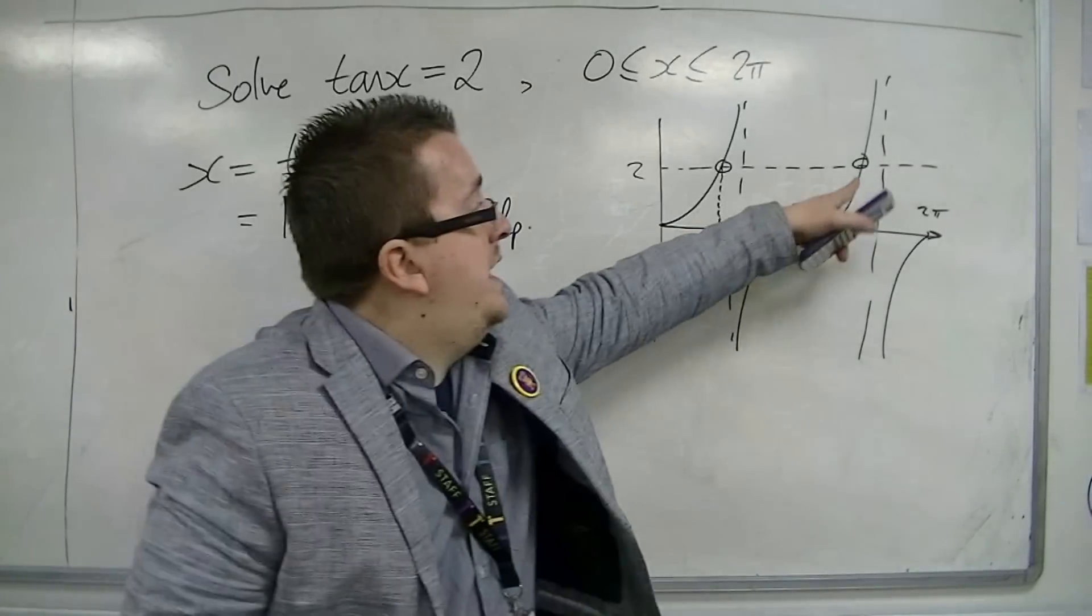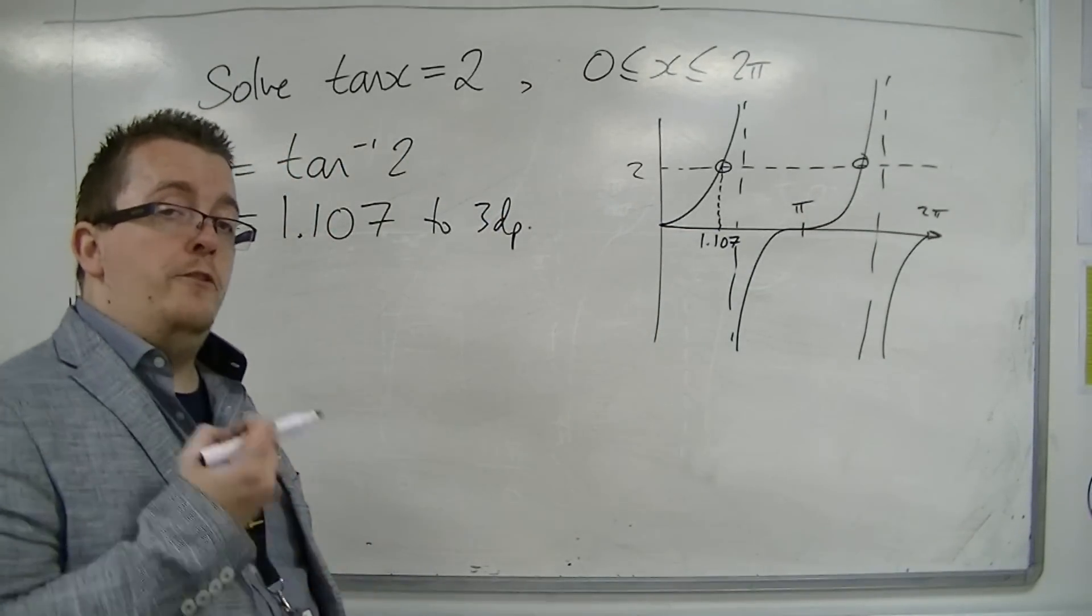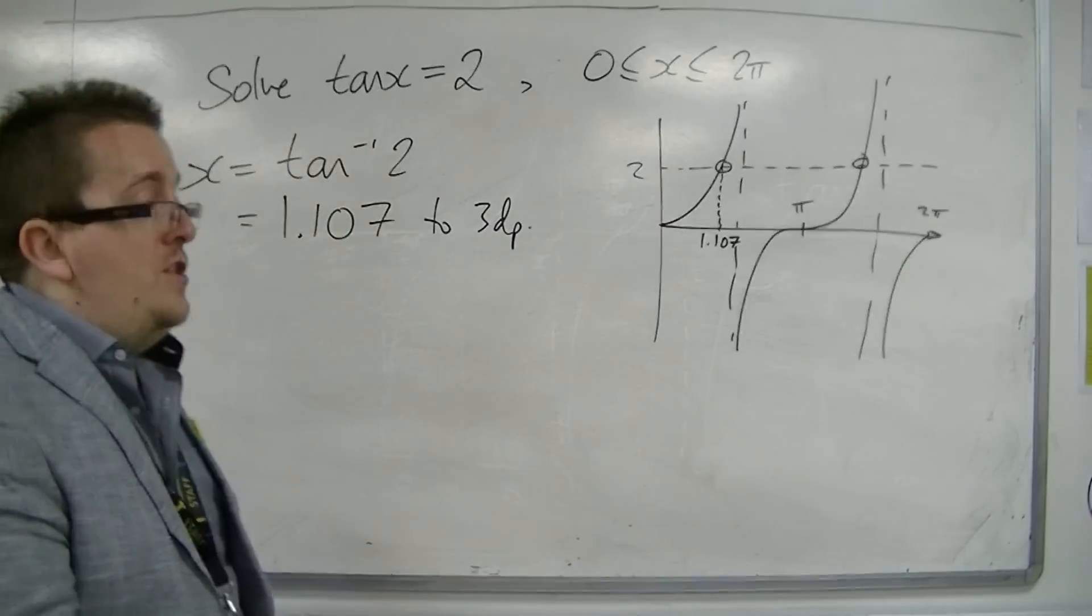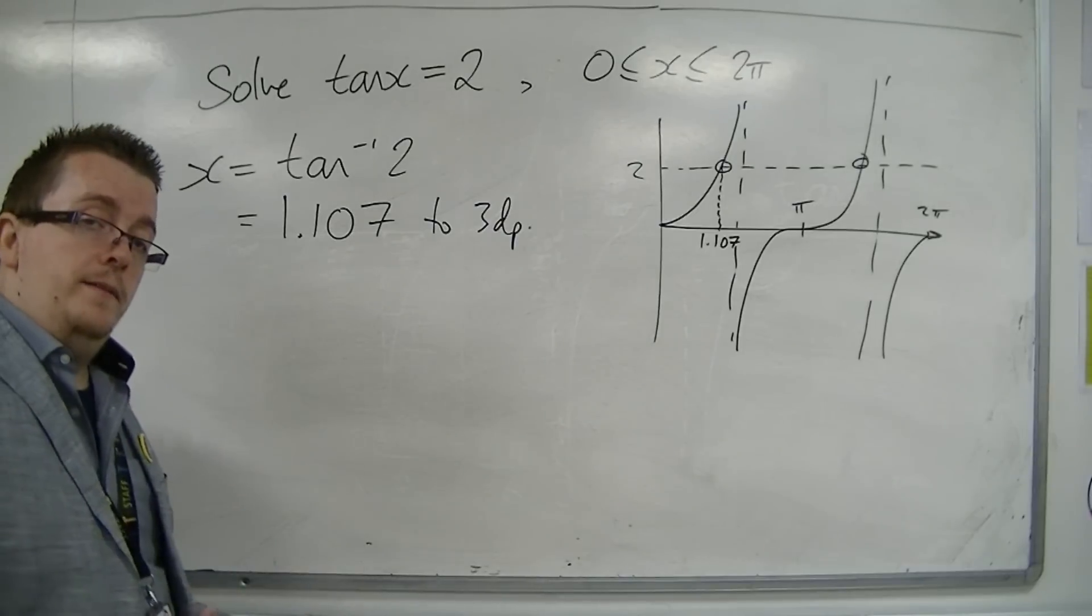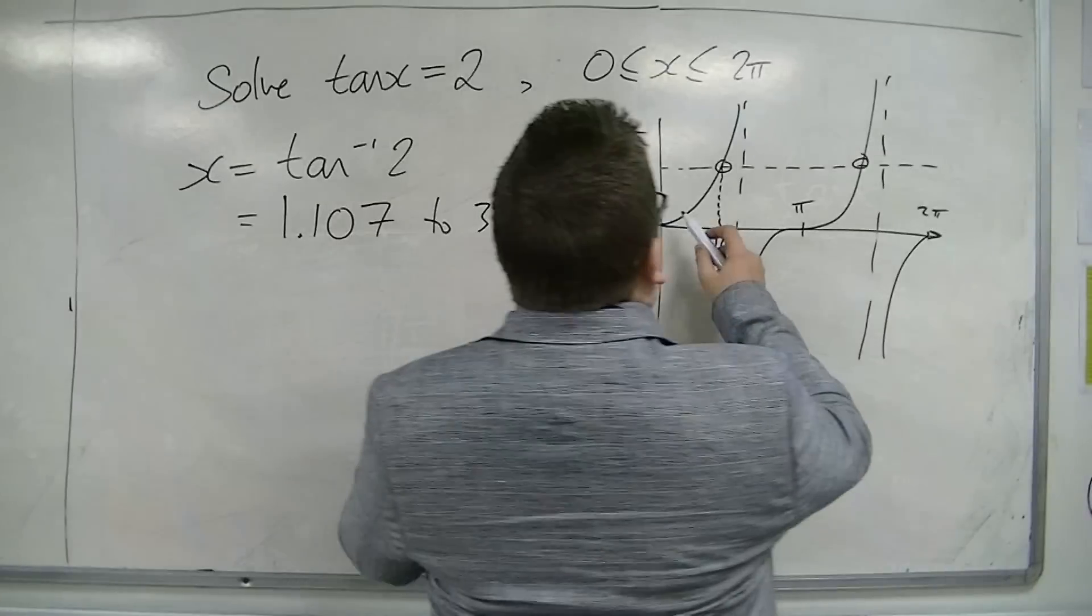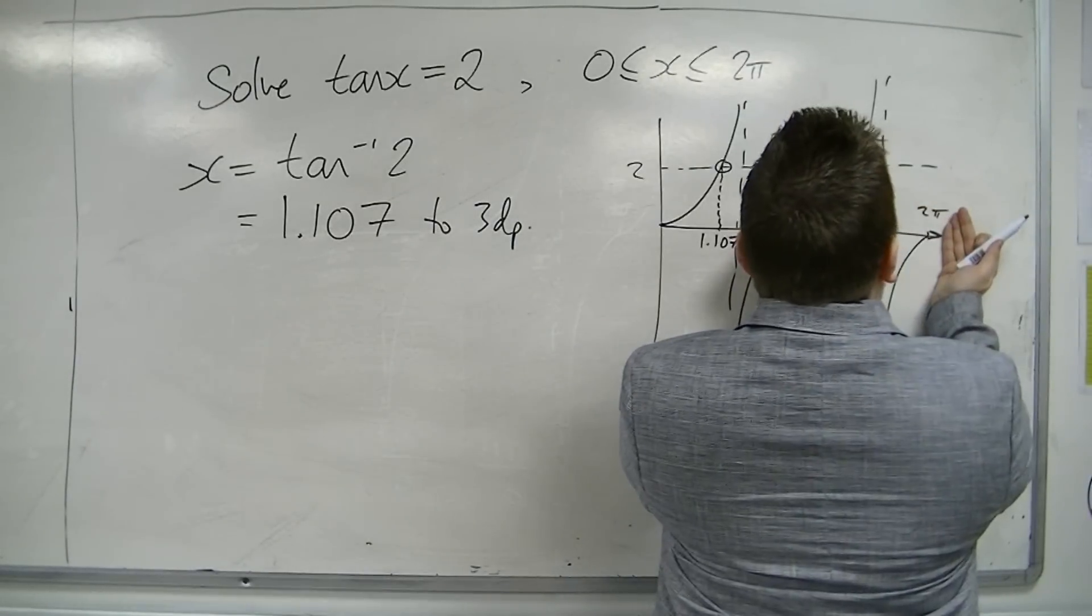Now, in order to get the other point, what we're going to utilize is the period of tan. Now, sine and cosine have this period of 2π. Tan has a period of π. So it repeats itself, so that is repeated every π.